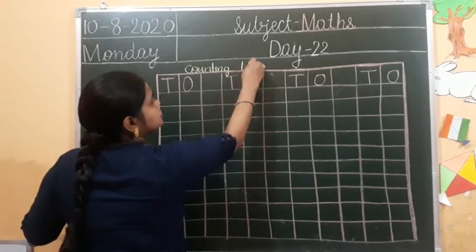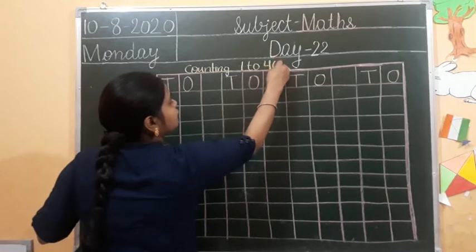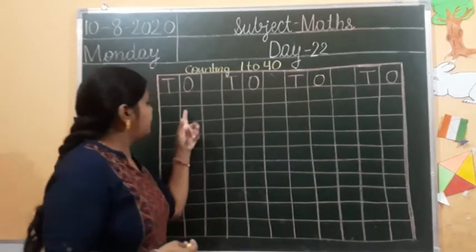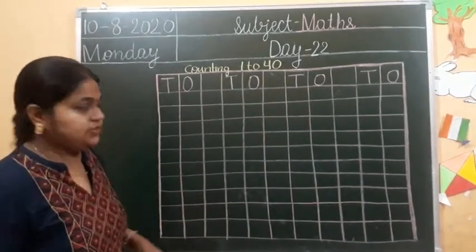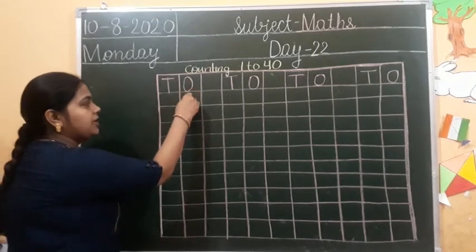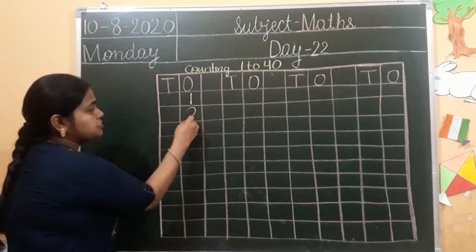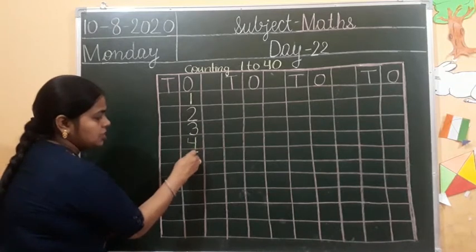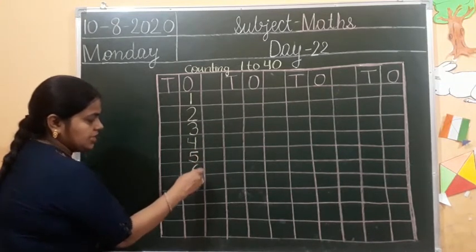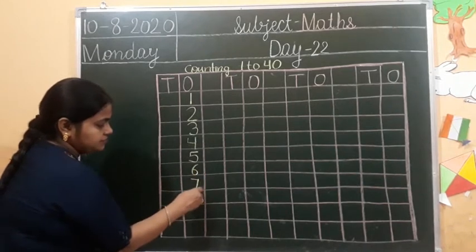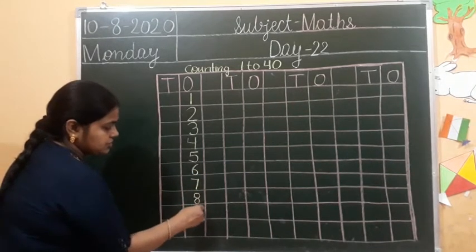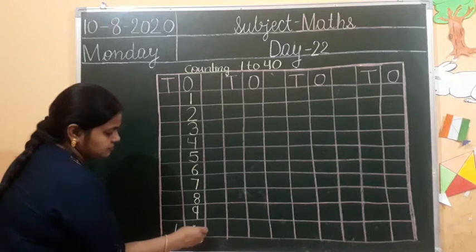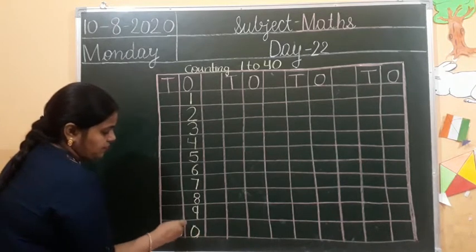1, 2, 40. Fine. So, I am going to write numbers on these boxes. Look carefully. Read the number: 1, 2, 3, 4, 5, 6, 7, 8, 9, 1, 0 — 10. 1, 0, 10.